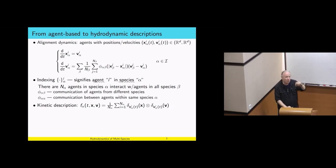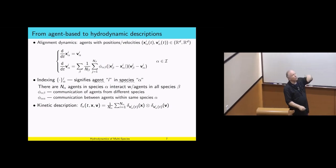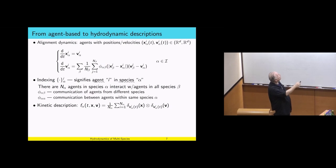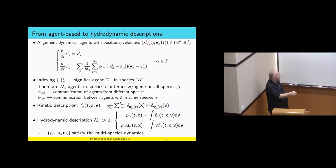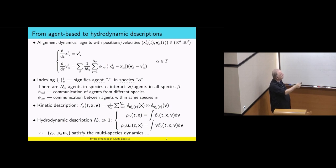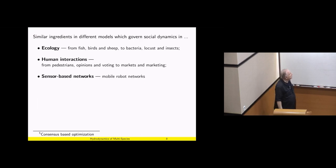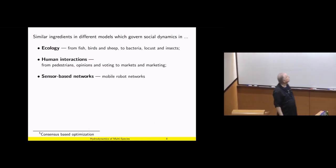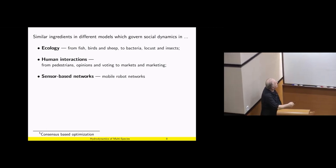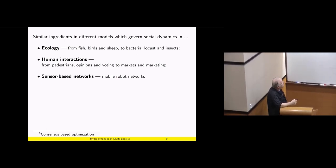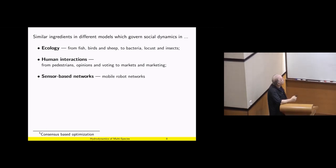If we didn't know the first lecture and want to do everything from the beginning: we create the kinetic description in terms of the empirical distribution, then we take moments, and we get rho alpha and rho alpha u alpha, recovering what is written. Of course, we need something about the pressure which I will not discuss further.